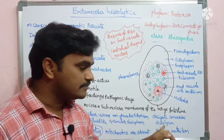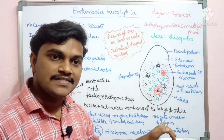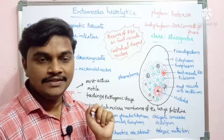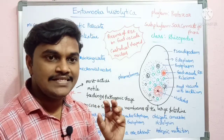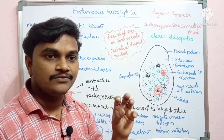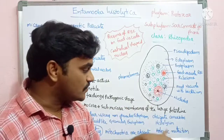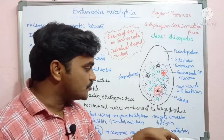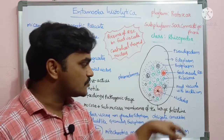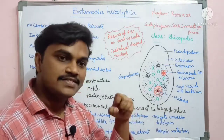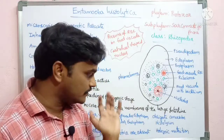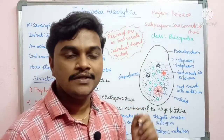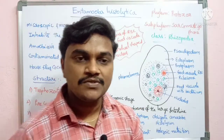The trophozoite secretes an enzyme called histolysin. That is why the name is Entamoeba histolytica — 'histo' means tissue, and histolysin breaks down the tissue. So they secrete histolysin, which causes breakdown of the mucosa and sub-mucosa layers.